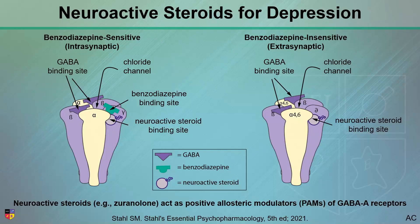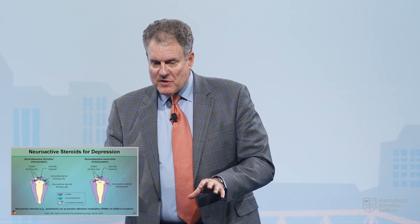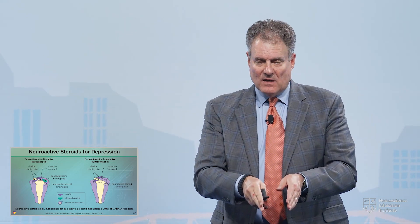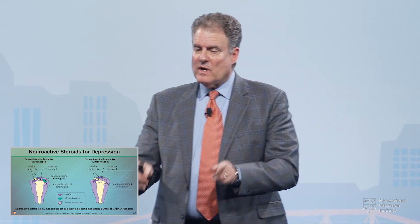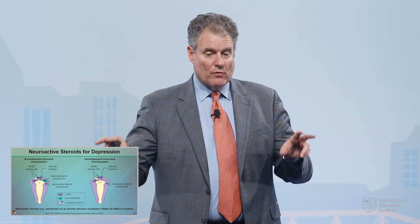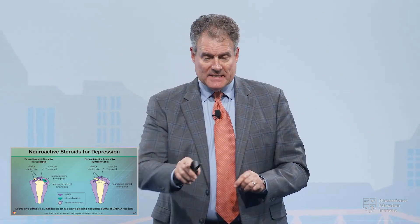There are intrasynaptic receptors sitting directly inside the synapse, which have to do with phasic, burst inhibition. There are extrasynaptic receptors that maintain a tonic inhibition. Benzodiazepines work intrasynaptically, as does alcohol, whereas neurosteroids work on both, and they have distinct binding sites.